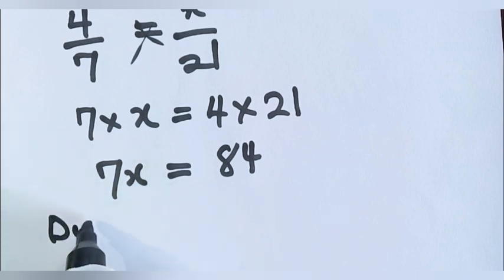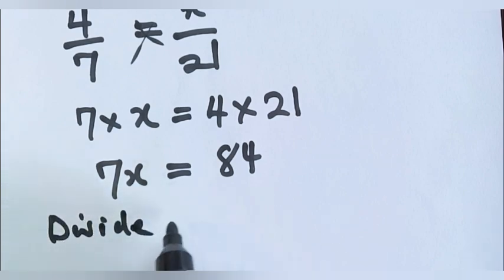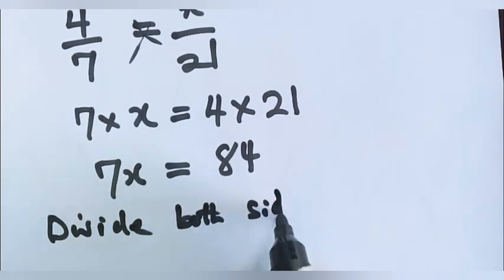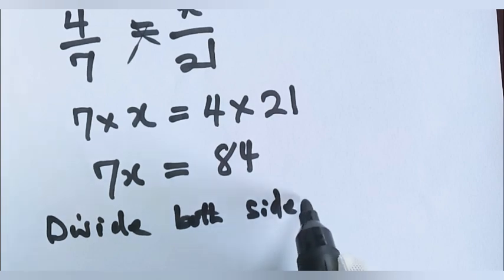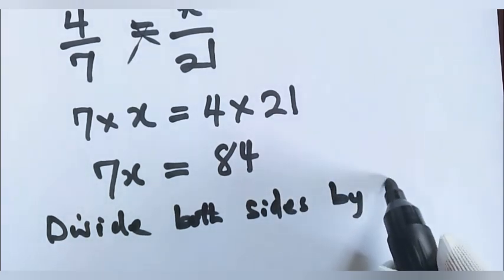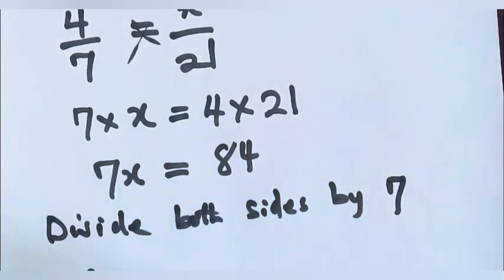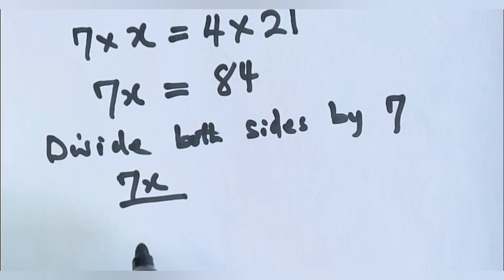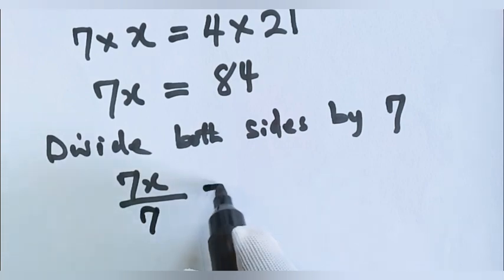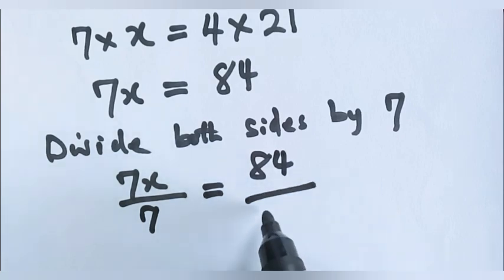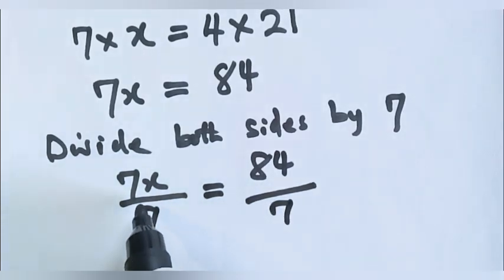So you write it, divide both sides by 7. So, 7x over 7 is equal to 84 over 7.